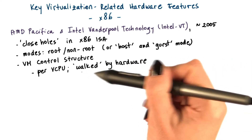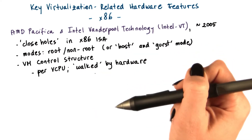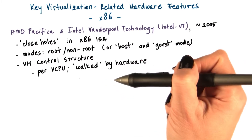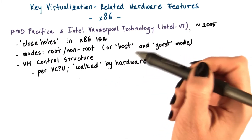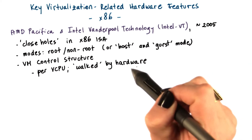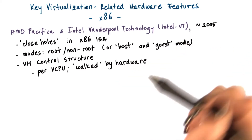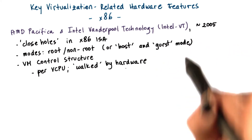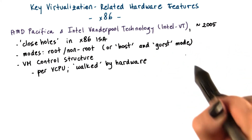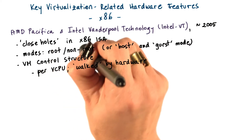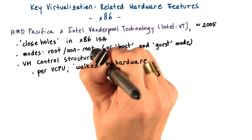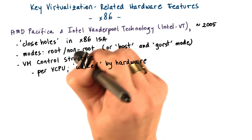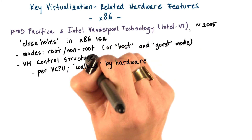The fact that the hypervisor understands how to interpret and walk this data structure means that you can specify whether or not a system call should trap. It's easy for the hypervisor to know that a particular type of operation should not cause a trap into root mode, and instead should just be handled by the privileged layer — the operating system — in non-root mode.